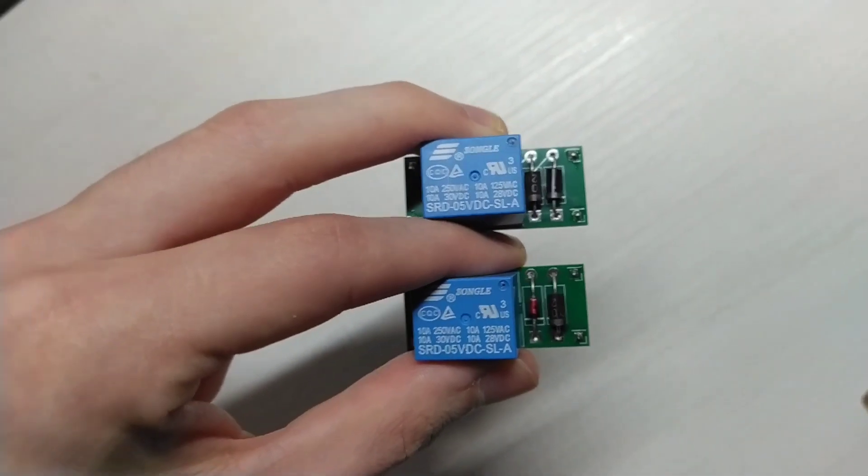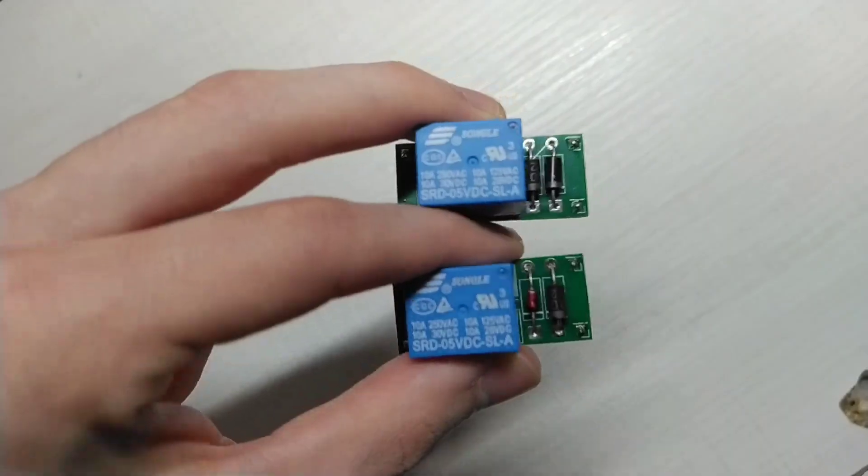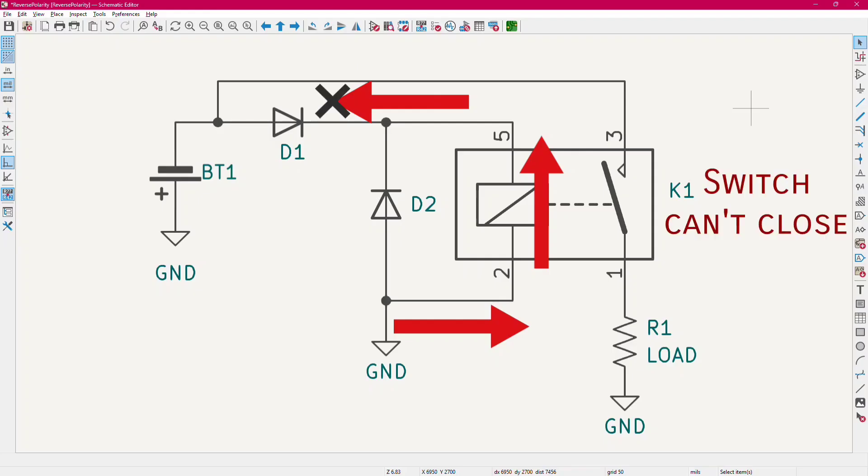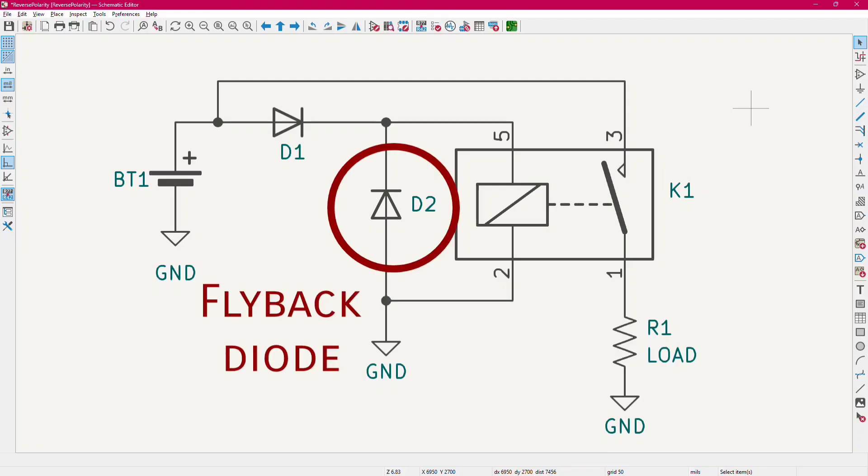Another reverse polarity protection circuit could be done with a relay. This is the circuit, and when the battery is connected properly, the current flows through this diode then the coil and then back to the battery. Once the switch is closed, the current flows from the battery through the switch and then through the load, and finally back to the battery. But when connected wrong, the diode doesn't allow the current to flow the other way. So the coil is not energized and the switch can't close. This diode here is just a flyback diode. Let's try it.